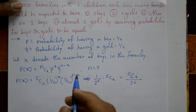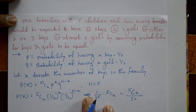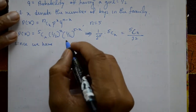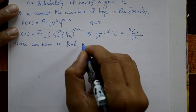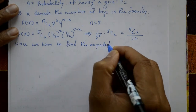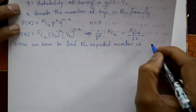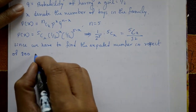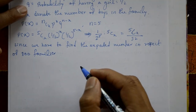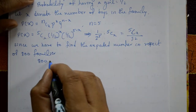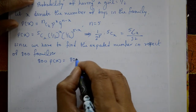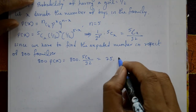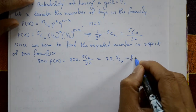Now we have to calculate for 800 families. We multiply by 800: 800 × P(X) = 800 × 5Cx / 32 = 25 × 5Cx. So the expected number of families is f(X) = 25 × 5Cx.